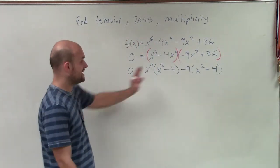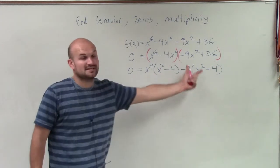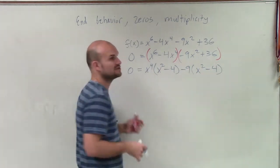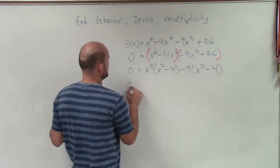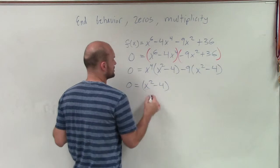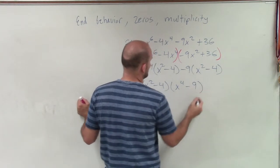To complete this yet, because I can't use zero product property because this isn't a product yet. This is a product minus another product. So I need to factor again out the GCF to produce a product. Therefore, I'll have 0 = (x² - 4)(x⁴ - 9).